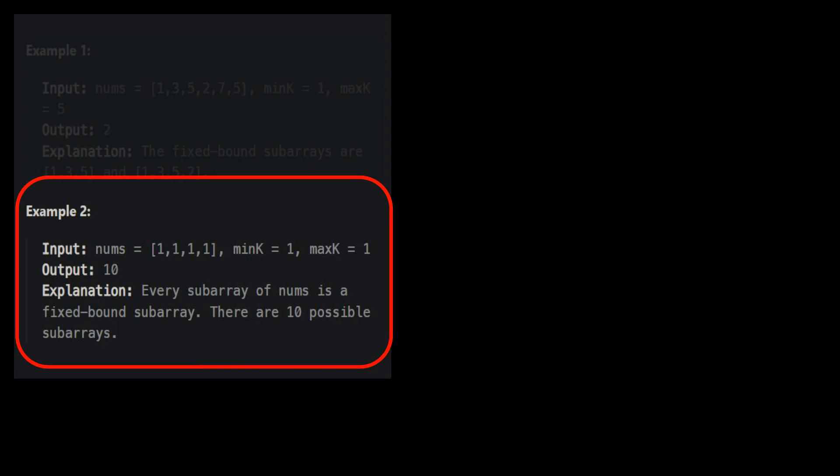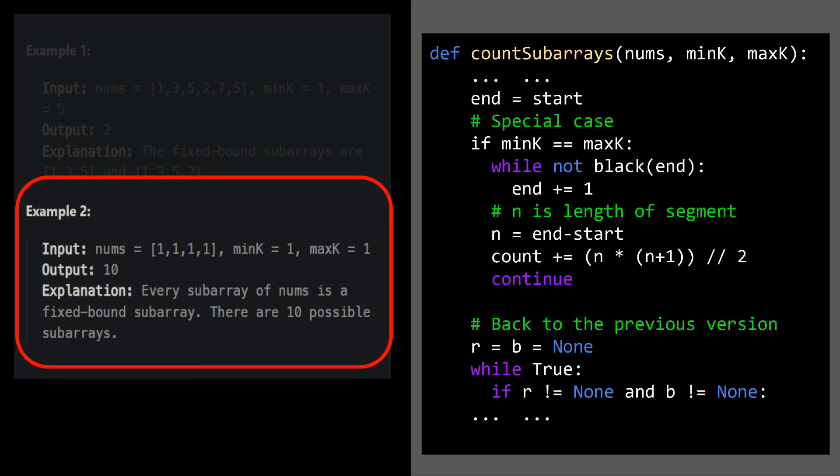Fixing this edge case isn't too difficult. We add an extra condition that checks when min k equals to max k. We just calculate the length of the segment, and then we apply the formula n times n plus 1 divided by 2.